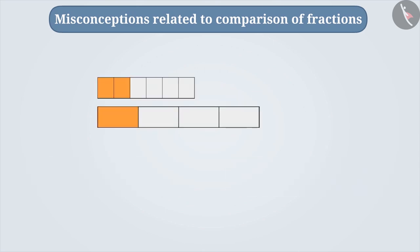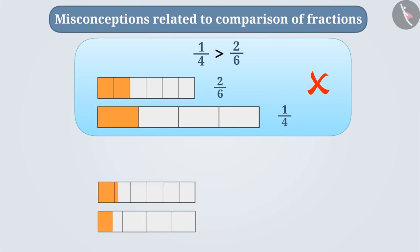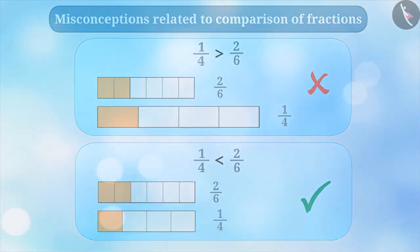Sometimes it is forgotten to keep the wholes equal. For example, while comparing 2/6 and 1/4, the wholes are not marked equally. In such situations, by looking at the shaded part, students consider 1/4 to be greater than 2/6. This is an incorrect understanding. The correct approach is to make the parts equal by keeping the wholes equal and then comparing them. By doing so, we get the correct answer: 1/4 is smaller than 2/6.